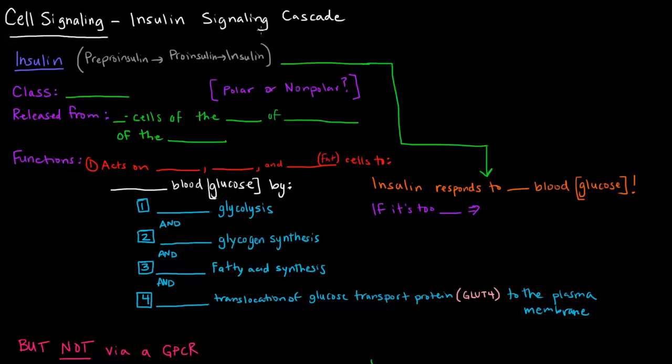In this video I want to talk about the signaling cascade for insulin. So insulin is a peptide hormone, or polypeptide hormone, and of course that means that it's a polar hormone, so it's going to act and bind a cell surface receptor.